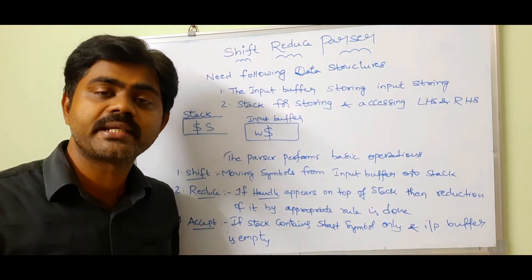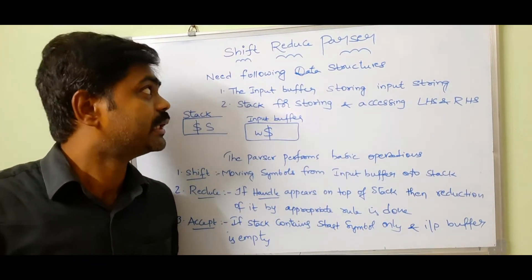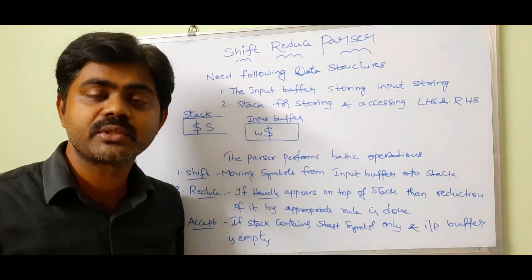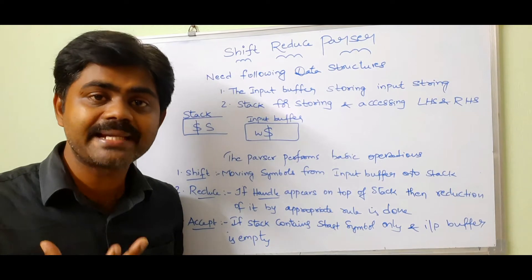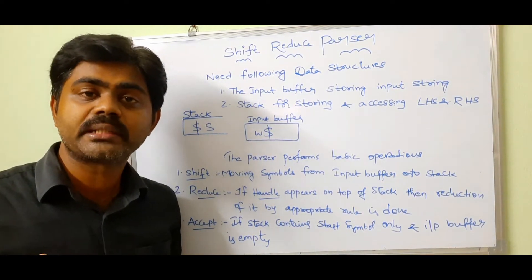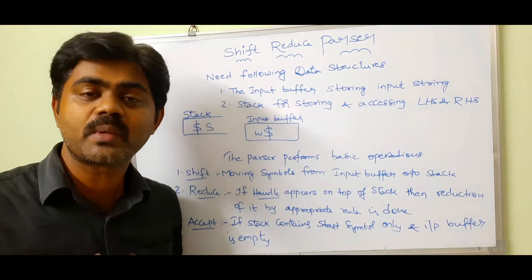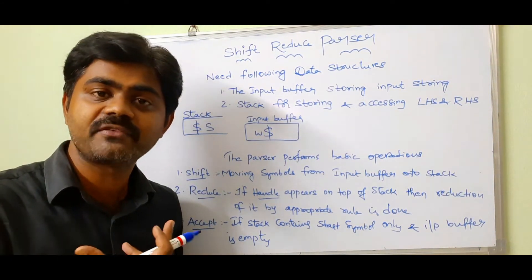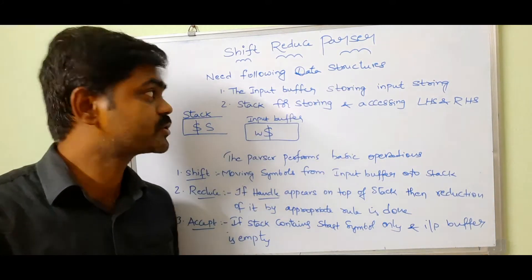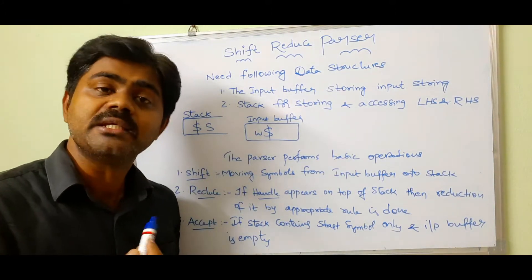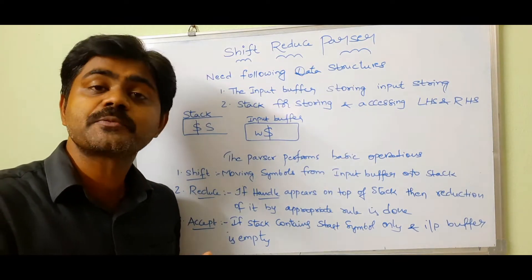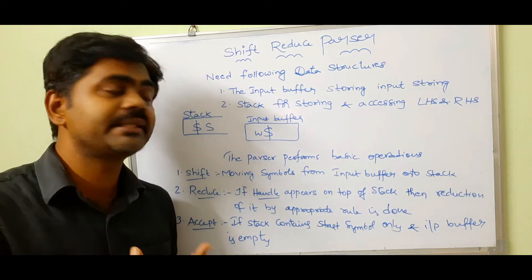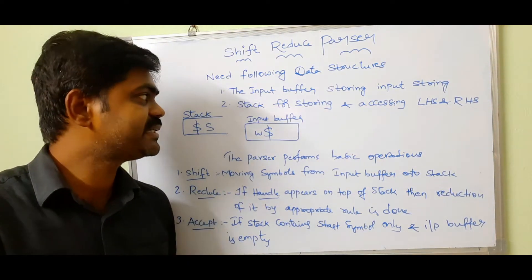Welcome to our channel. Today we're going to discuss shift-reduce parser, which is a bottom-up parsing approach. In the previous class we discussed handle pruning. In shift-reduce parsing, we start with leaf nodes and finally reach our root node. To complete shift-reduce parsing, we require two data structures: the first is the input buffer, storing the input string, and the second is a stack.